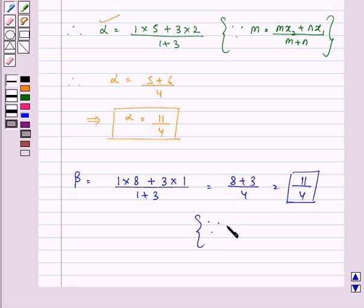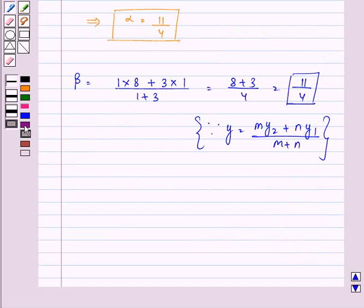This is because we can get the value of Y by MY2 plus NY1 upon M plus N, where M and N are 1 and 3 respectively. So we can see that therefore we have the coordinates, that is alpha and beta, as 11 by 4 comma 11 by 4.